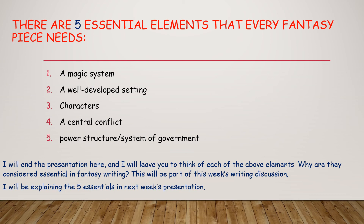Here we have five essential elements — five very important elements that every fantasy piece needs. First, a magical system. Second, a well-developed setting — going back to our previous presentation about setting, we're talking about the time and place the story takes place. Third, characters. Fourth, a conflict — whether it's an internal or external conflict, a problem that takes place. Fifth, a power structure or system of government — who controls the government in your story, who has the power.